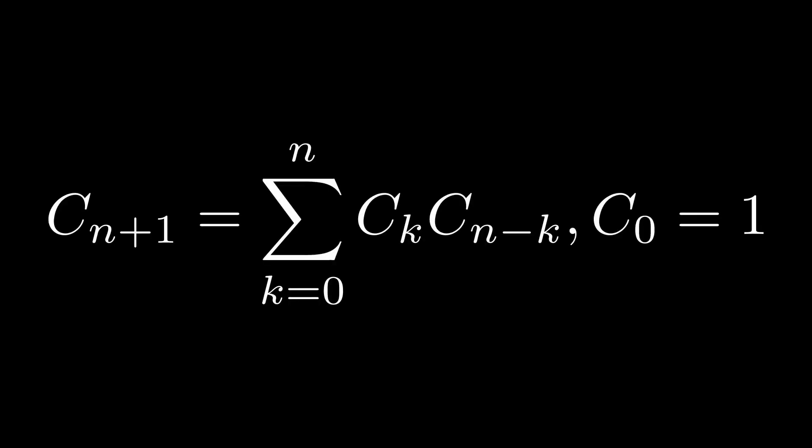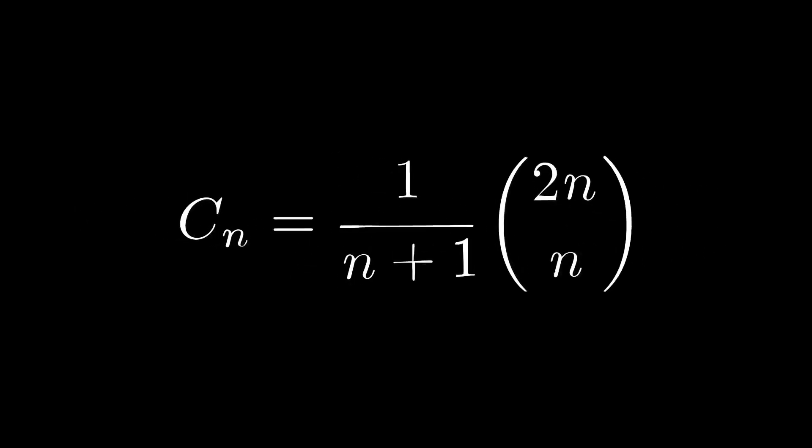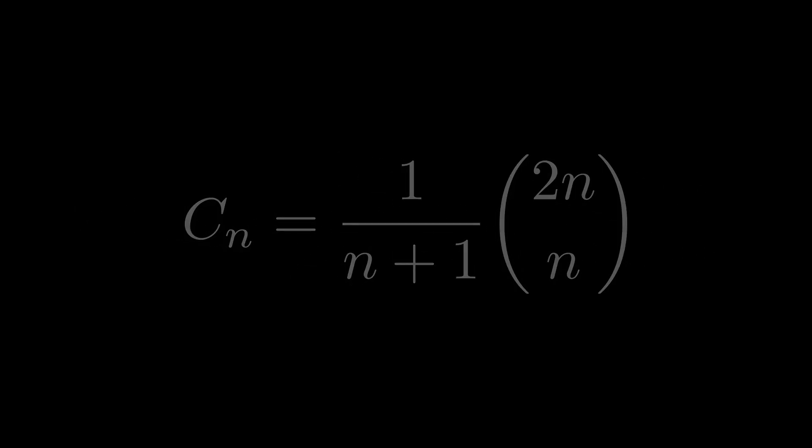The nth Catalan number, denoted as C sub n, can be expressed using the following recurrence formula. However, this isn't the only way to define the Catalan numbers. We can define them also using this explicit formula. We will later prove both the explicit and recurrence formulas.